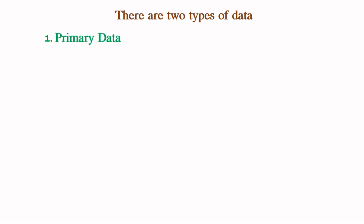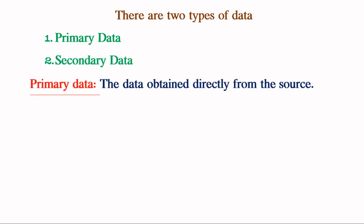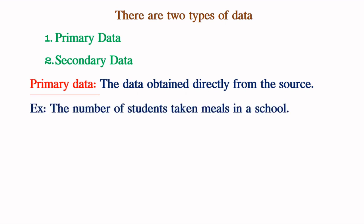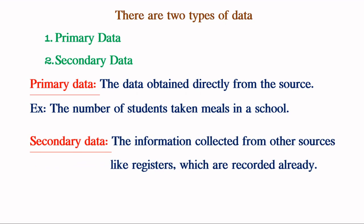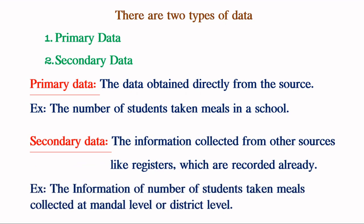There are two types of data. First one is primary data and second one is secondary data. The data obtained directly from the source is called primary data. For example, the number of students who took meals in a school, obtained by directly counting. Secondary data is information collected from other sources like registers which are recorded already. For example, information on students who took meals collected at mandal or district level from school registers.